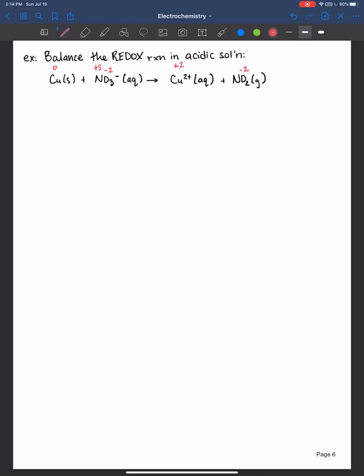Negative two times two is negative four, so nitrogen must be positive four because it needs to add up to zero. It's a neutral molecule of nitrogen dioxide, right? And so we do see that nitrogen is becoming more negative, so that tells us it's undergoing reduction.